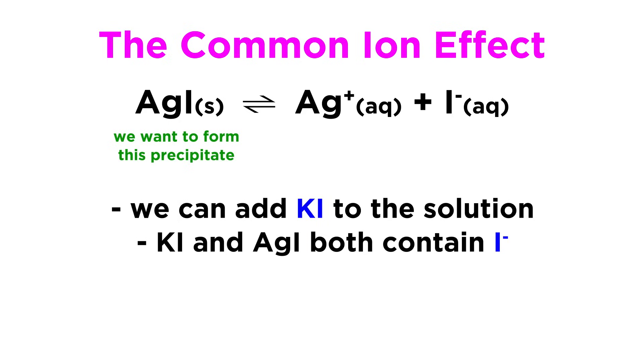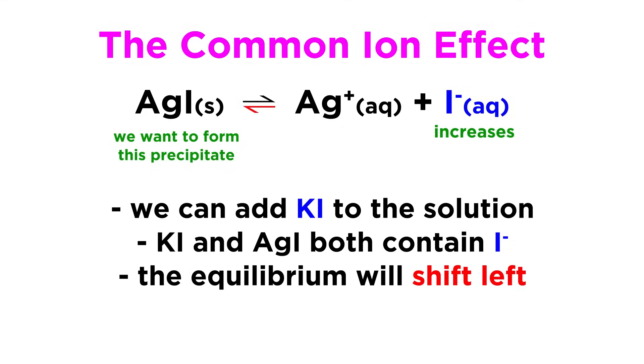Potassium iodide shares a common ion with silver iodide, that being the iodide ion. If there is more iodide ion in solution, that will affect the equilibrium, and it will shift left to use up the excess iodide ions.